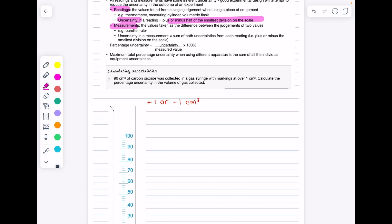A measurement now, these are the values taken as the difference between the judgment of two values, such as if you're taking a volume reading from a burette or ruler. The uncertainty in a measurement is therefore the sum of both uncertainties from each reading.